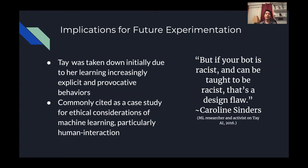Artificial intelligence like Tay has left many implications for the future of AI experimentation. After less than a day in operation, Tay was taken down as a result of malicious users causing her to learn inappropriate and explicit language. Her unsupervised model of learning led to her picking up clearly misguided words and expressions, and since it wasn't supervised, no one could oversee or stop what she was learning. She is now cited as a case study for ethical considerations in machine learning — how humans interact with machines, the limitations we should place on AI, and how unsupervised AI can go horribly wrong. As stated by researcher and activist Caroline Sinders in 2016: 'If your bot is racist and can be taught to be racist, that's a design flaw.'